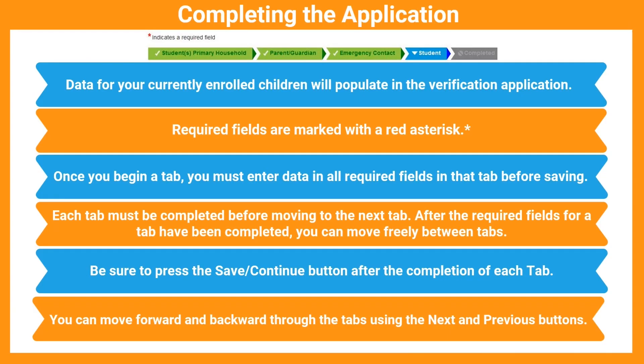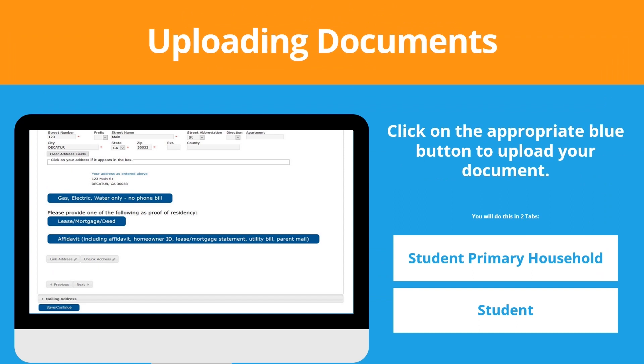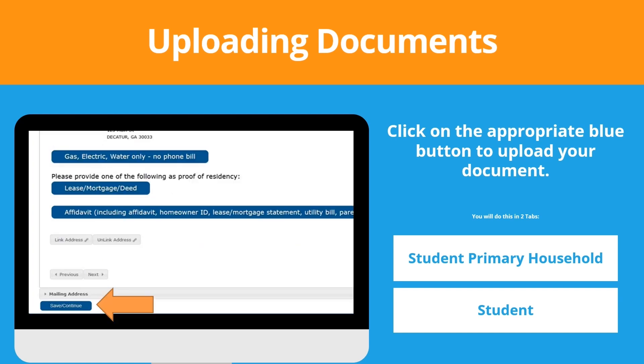Once in the application, be sure to review the information under each tab carefully and make updates as needed. Complete all required fields and press save and continue along the way. When uploading your proof of residency, click the appropriate blue box, then find and select your file. You'll repeat these same steps when it's time to upload your photo ID under the student tab.